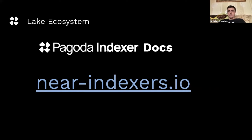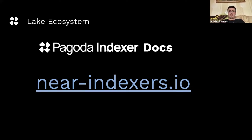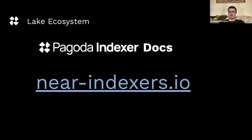A question from Mario: why S3? We first tried Kafka, but our goal was to save history somewhere. The end goal of the Lake ecosystem is not to provide a completely decentralized solution — for that you can use the Indexer Framework. We wanted to empower web2 developers, newcomers, or someone with a smaller budget with something that lets them get data from the blockchain as fast as possible, including historical data. That's why we ended up with S3 storage.